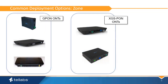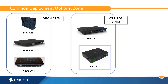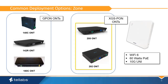ONTs that can be used in a zone deployment are the ONT-140C, 142R, 180C, the 205, and the 202. These ONTs require DC power from a power distribution source. The ONT-202 is unique in that it is plenum rated and does not need to be in a plenum enclosure. The ONT-205 and 202 are ideal for WiFi deployments as they provide 60W of PoE power and 10GB uniports.